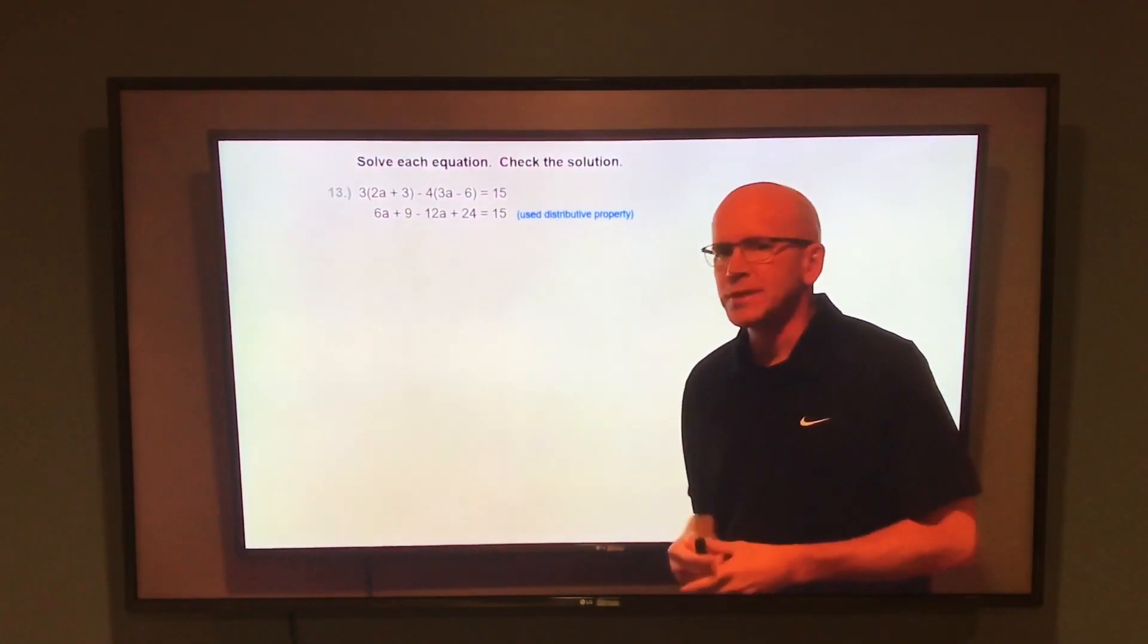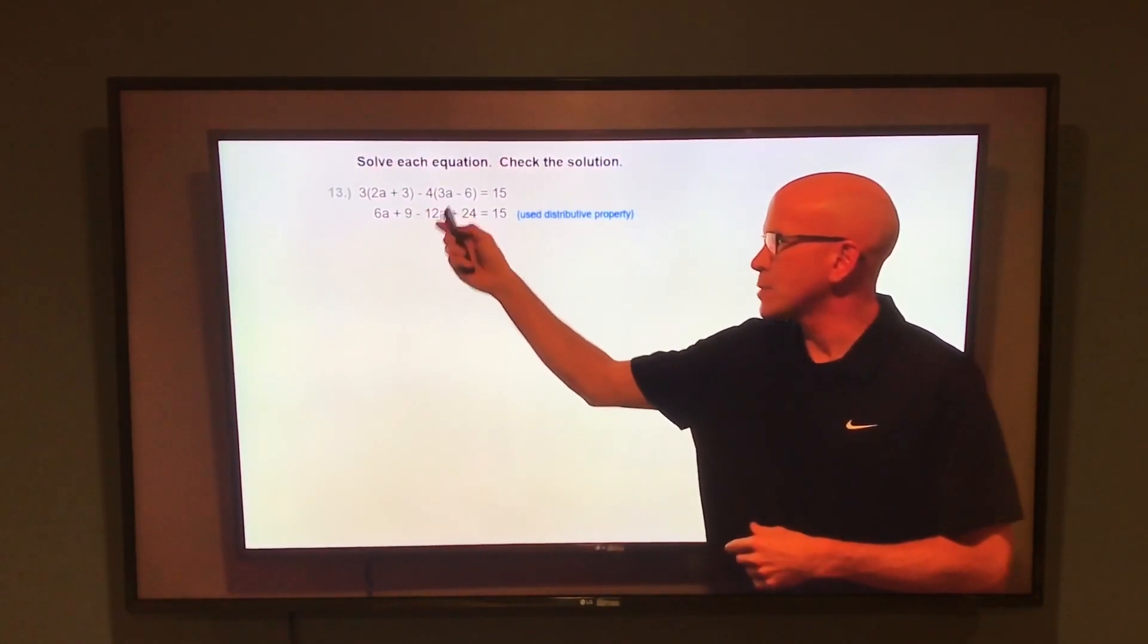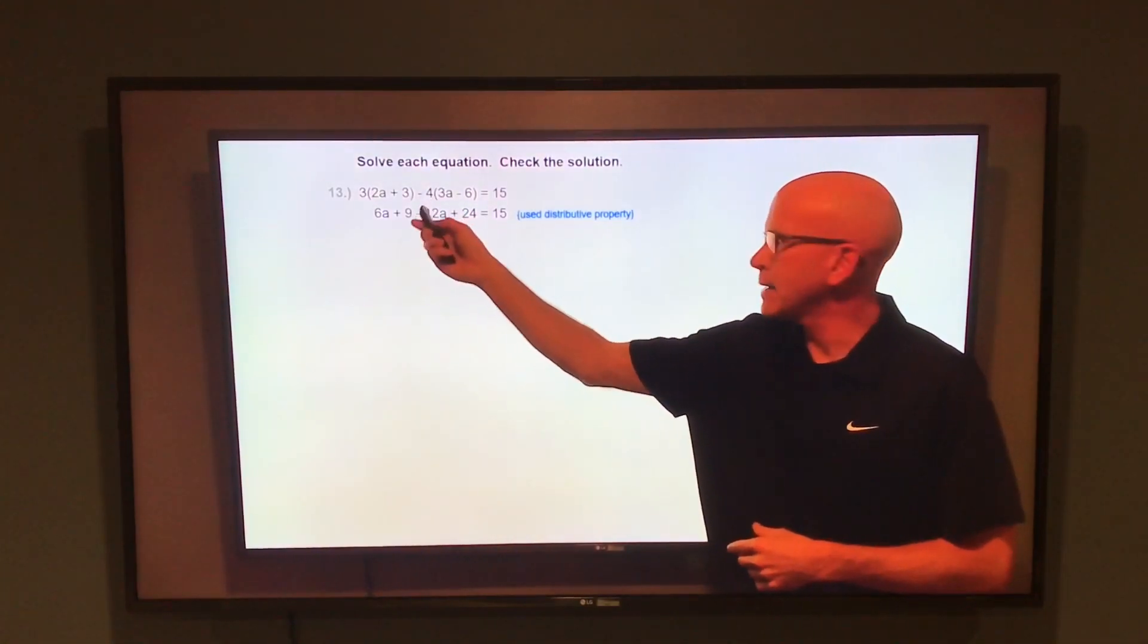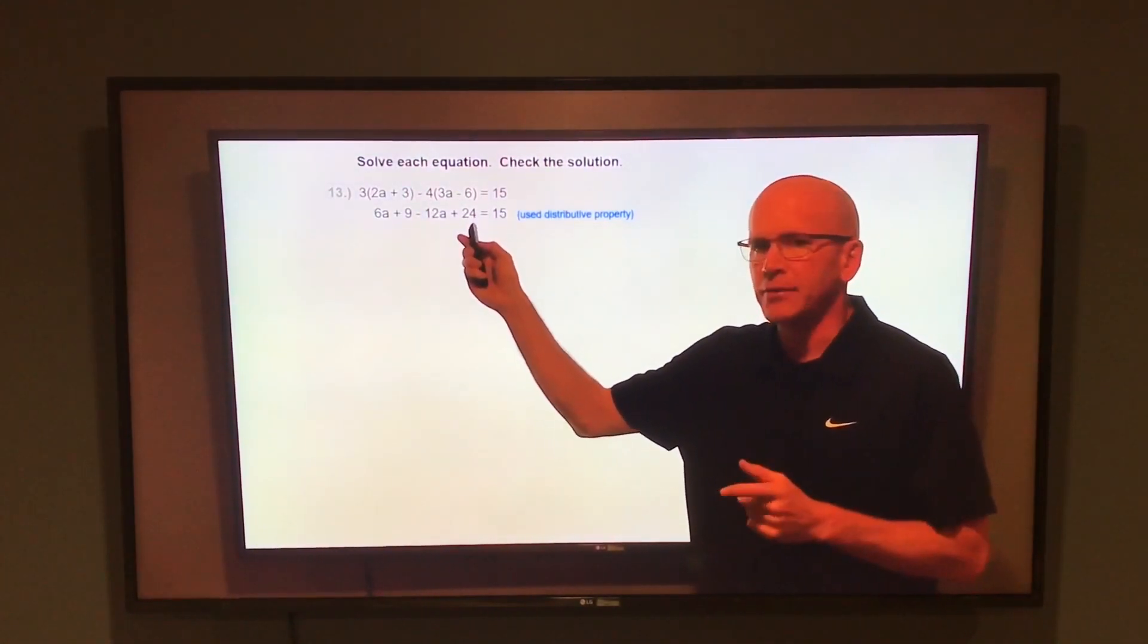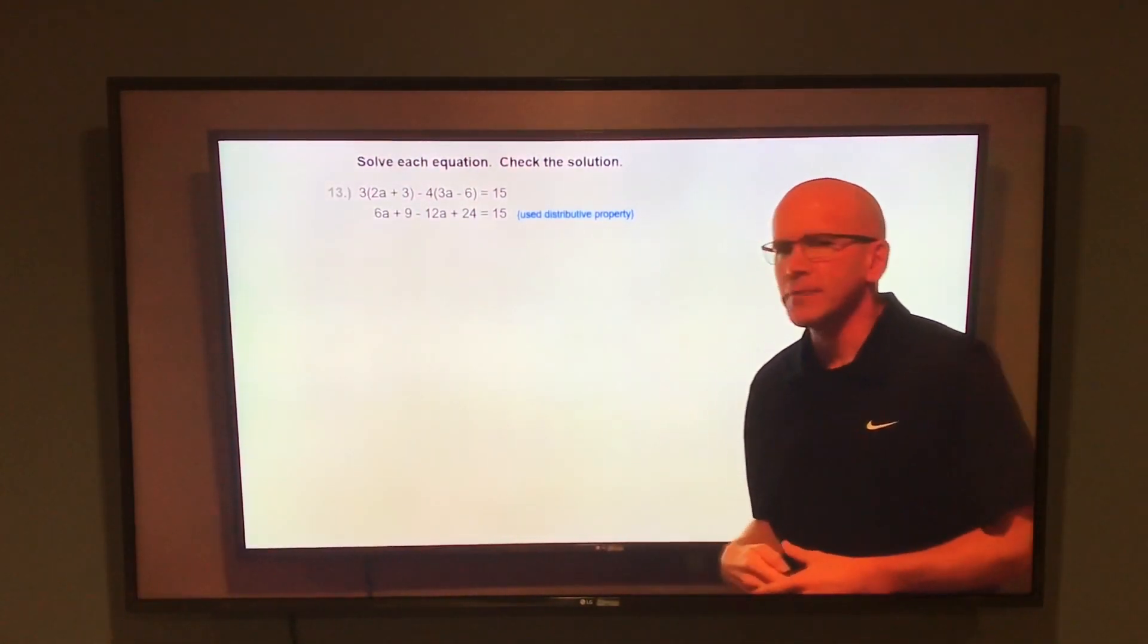Then distribute the negative 4 through the second set of parentheses, negative 4 times 3a would be negative 12a, and negative 4 times negative 6 is positive 24. That's still equal to 15 on the right side.